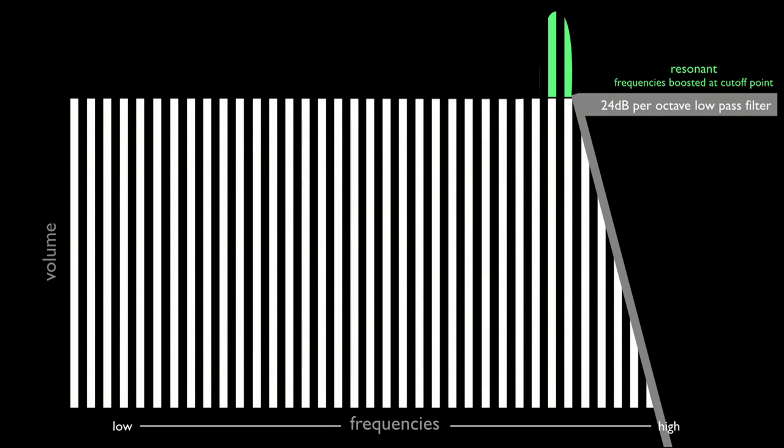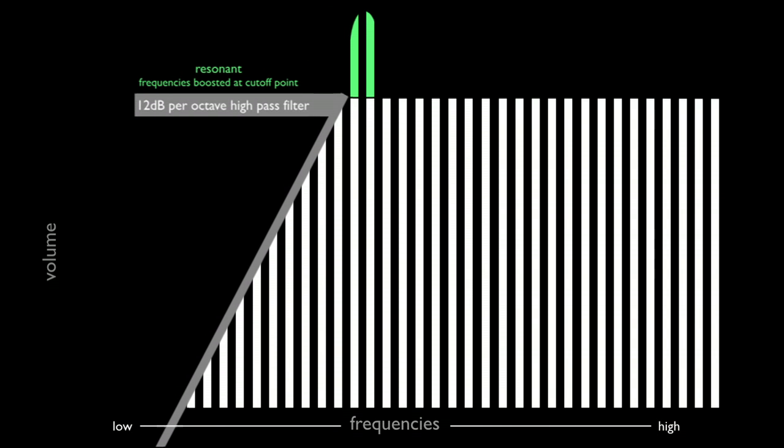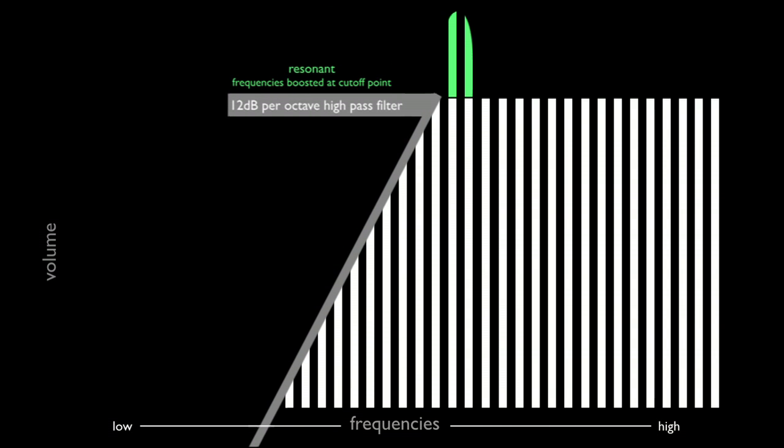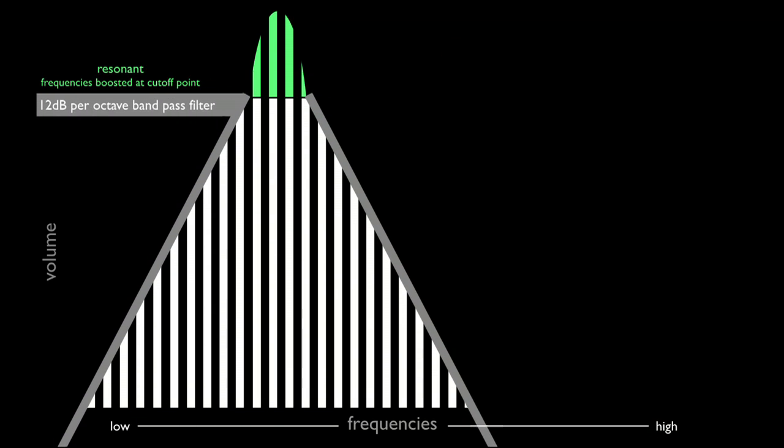Resonance is an effect where the frequencies at the cutoff point of the filter are amplified. This results in a change of timbre. Different filter types and filter slopes result in different sounding resonance.